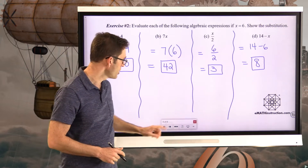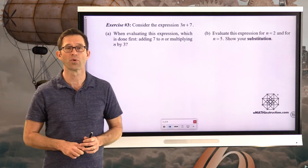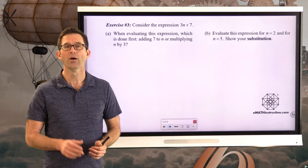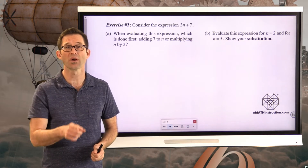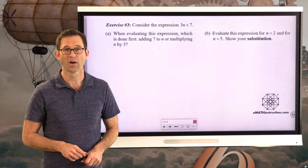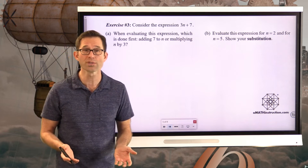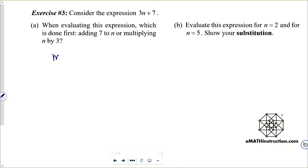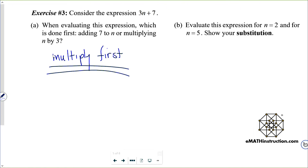Exercise 3: consider the expression 3N plus 7. Letter A — when evaluating this expression, which is done first: adding 7 to N, or multiplying N by 3? Hopefully you said multiplication, because your order of operations says you must do that product before that sum. Multiply first. The only way we'd add first is if it were in parentheses, but it's not.